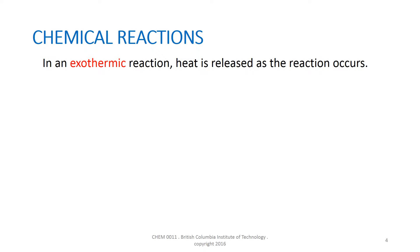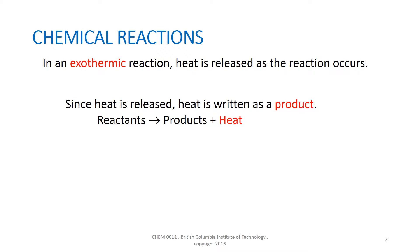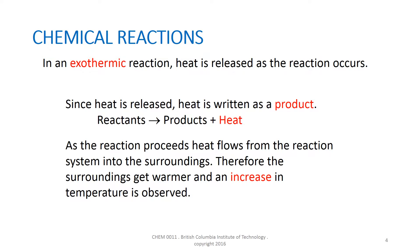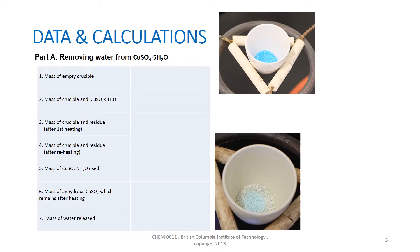In an exothermic reaction, the products have lower energy than the reactants. Therefore, energy, usually in the form of heat, flows out of the reacting system. Since energy is released as the reaction proceeds, heat can be written as a product in the chemical reaction. Since energy is flowing into the surroundings, the surroundings are gaining energy. Therefore, the surroundings will get hotter and an increase in temperature will be observed.